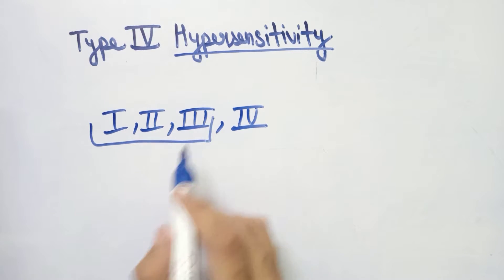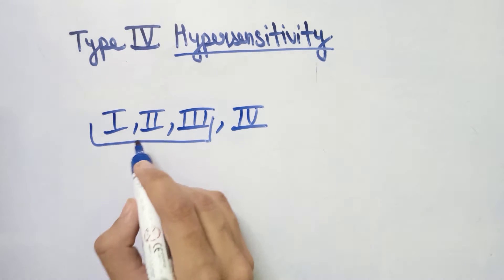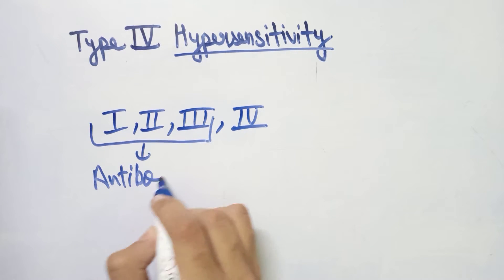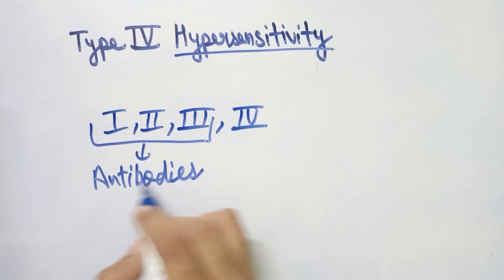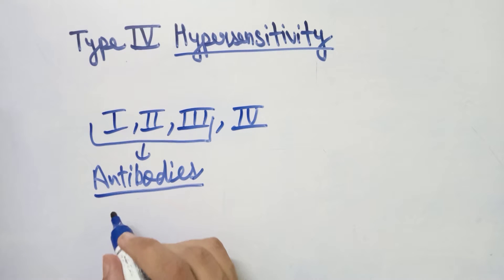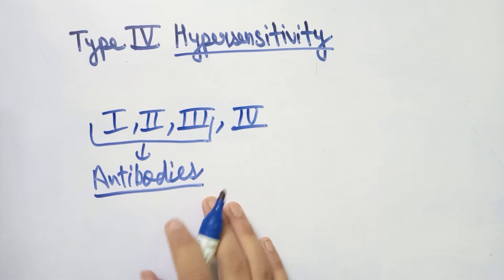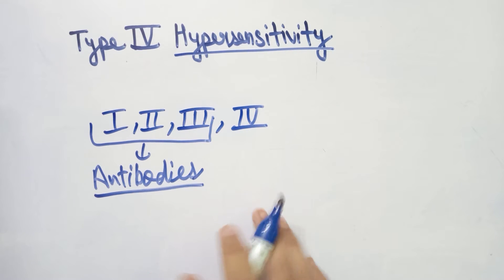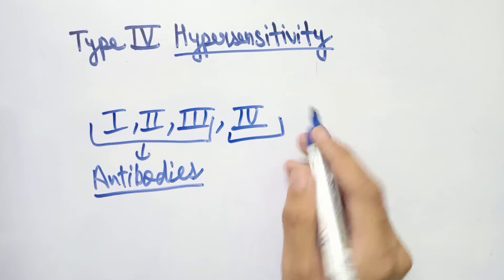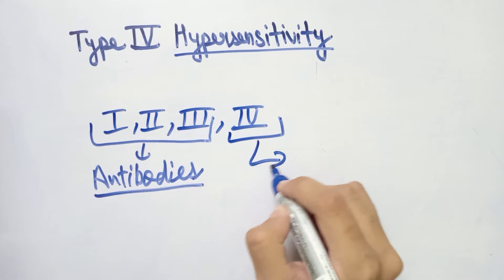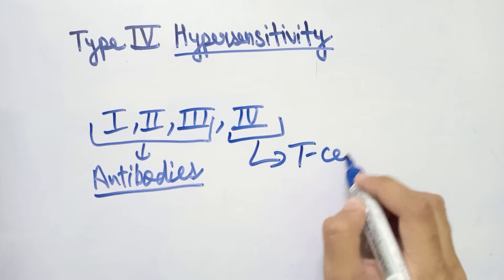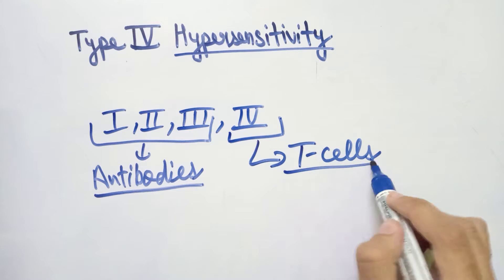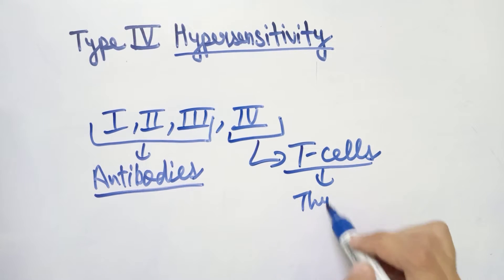Types 1, 2, and 3 hypersensitivity are antibody-mediated, meaning different classes of antibodies like IgG, IgA, and IgM are involved in those reactions. But in Type 4 hypersensitivity, the reaction is mediated by T cells. These cells are known as T cells because they are produced by the thyroid gland in our body.